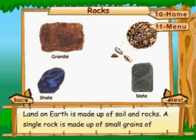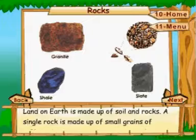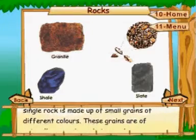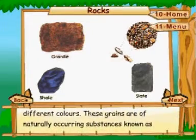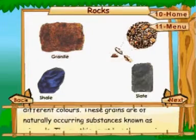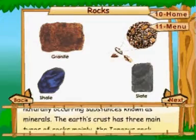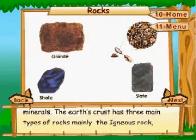Rocks: land on Earth is made up of soil and rocks. A single rock is made up of small grains of different colors. These grains are of naturally occurring substances known as minerals. The Earth's crust has three main types of rocks.